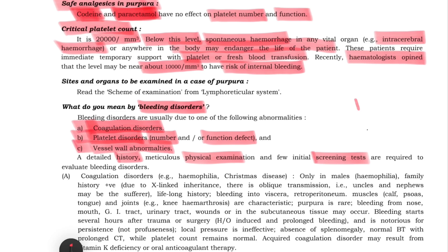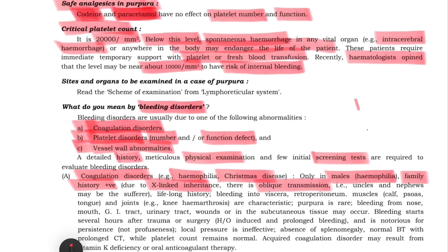If there is a coagulation disorder, it could be hemophilia or Christmas disease. Coagulation disorder typically affects males - in hemophilia, males are predominantly affected. There is a family history, and it is an X-linked inheritance with oblique transmission, meaning uncles and nephews are affected. There is a lifelong history of bleeding in coagulation disorder, with bleeding into major muscles and viscera, and retroperitoneal structures.